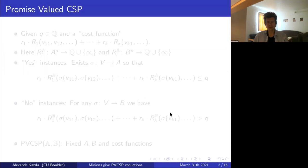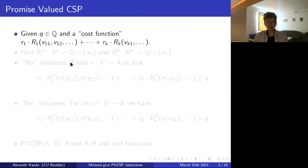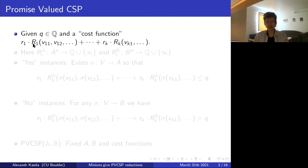Let me begin by explaining what promised valued CSP is. I've got a cost function that's a sum of some parts, and each part consists of what's called a valued relation — some R, like a prefabricated cost function applied to some variables. Those V1,1, V1,2 and so on are just symbols that stand for some variables. Then I can multiply each of these R's by a positive rational number r. All numbers are rational because we cannot represent all real numbers, and I make a sum of them.